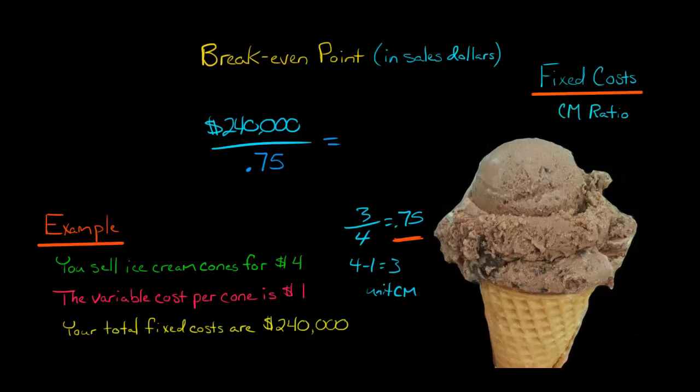Okay, and so we calculate this out. We take the 240,000 and divide it by 0.75, and that gives us $320,000.